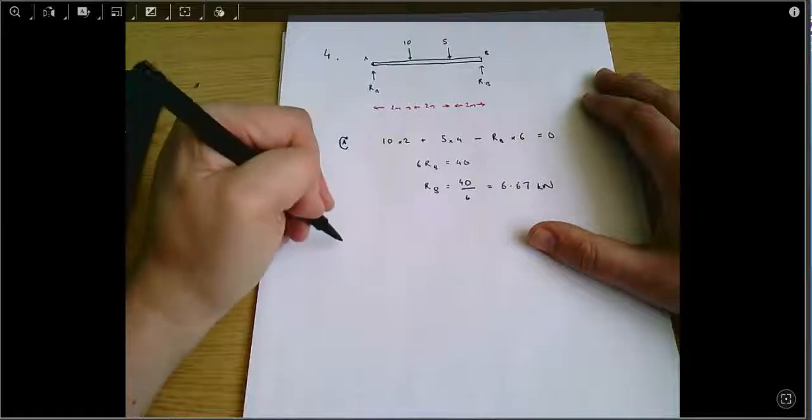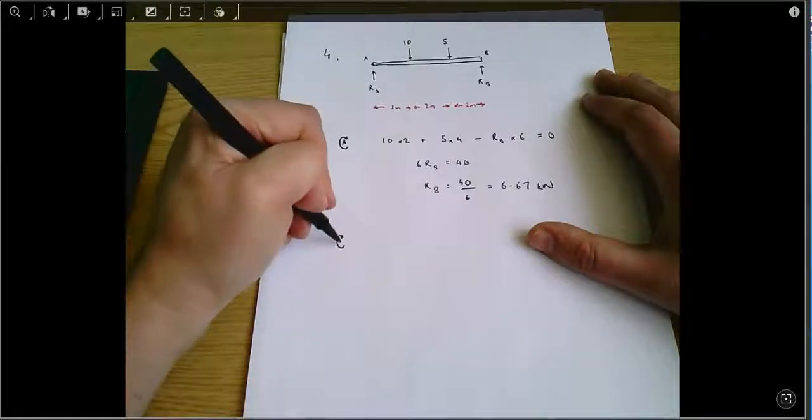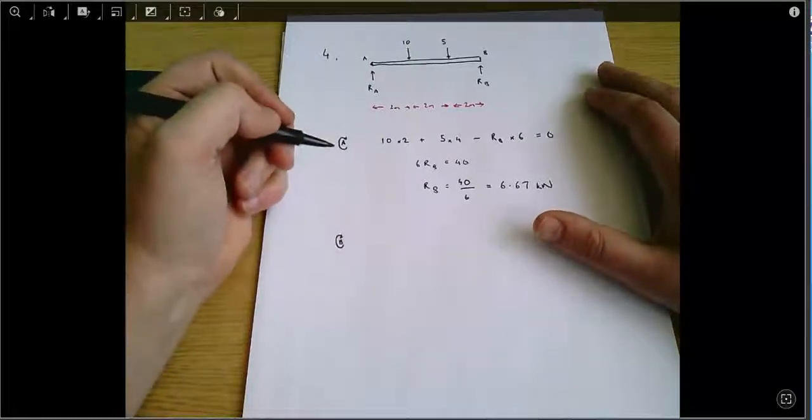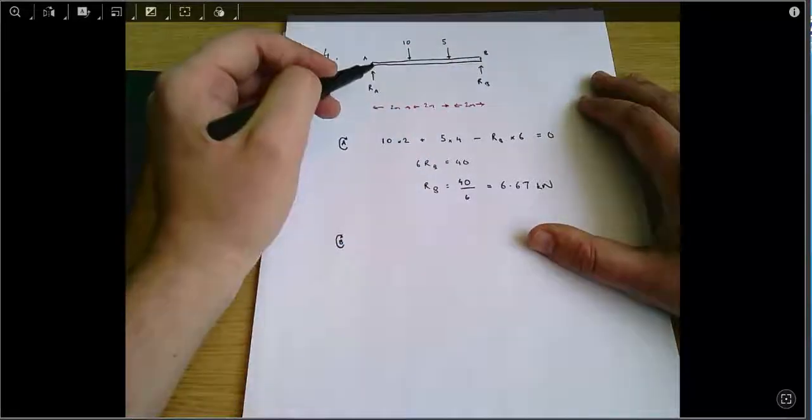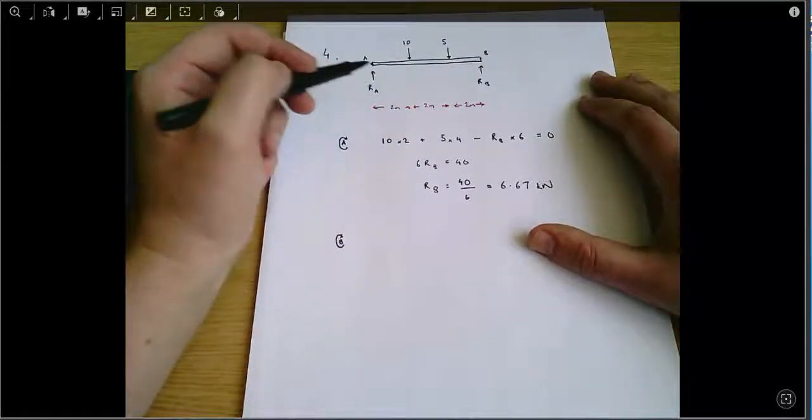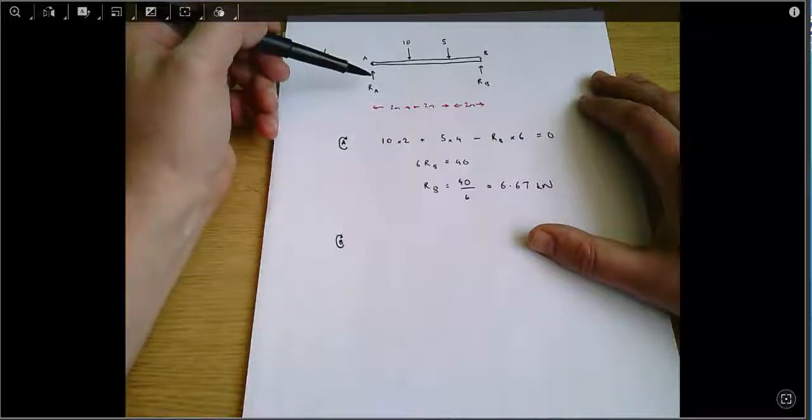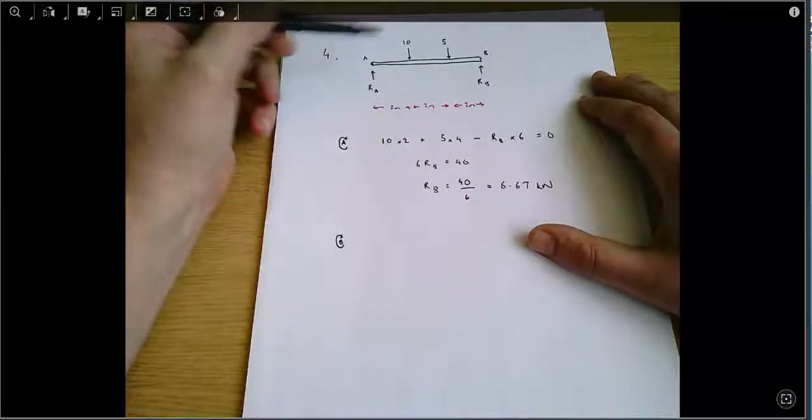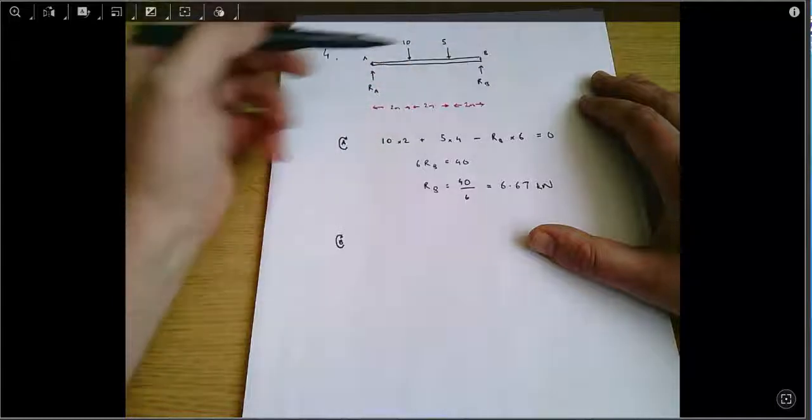Now what I can do is take clockwise moments about B, and this time I won't need RB, but RA will turn up in the equation, so I'll be able to solve for RA. Again, I'm just gonna go accounting for all the forces that are acting on the beam, going from left to right on my diagram.